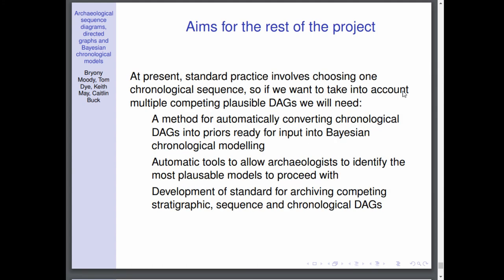So at present, standard practice involves taking one chronological sequence and deciding that that's your main one. But as I mentioned before, there's a possibility of considering multiple different sequence DAGs, chronological DAGs, and so on. So how are we going to manage that? We're aware that we're going to need to. We're going to want a method for automatically converting chronological DAGs into priors ready for input into Bayesian chronological modelling.